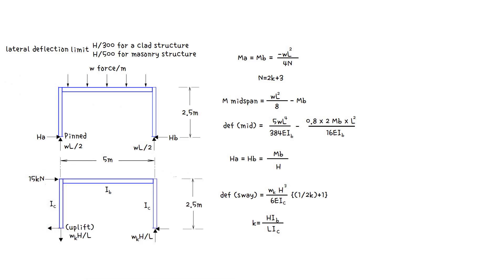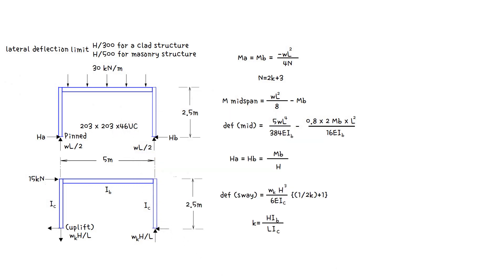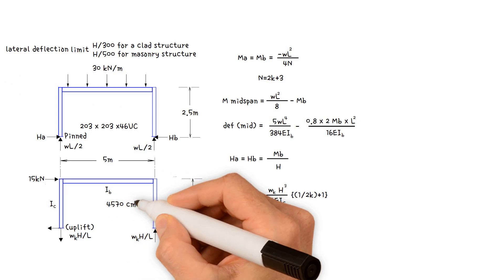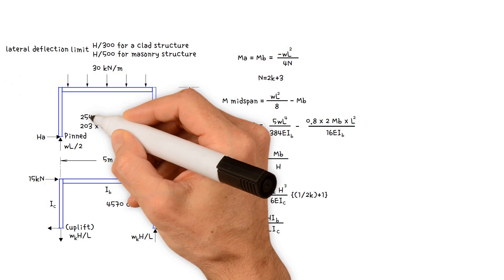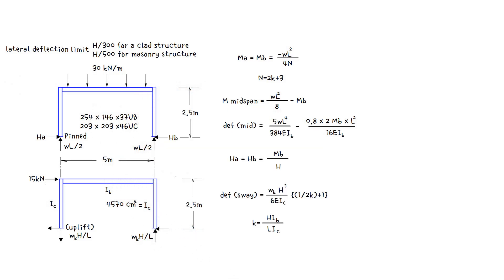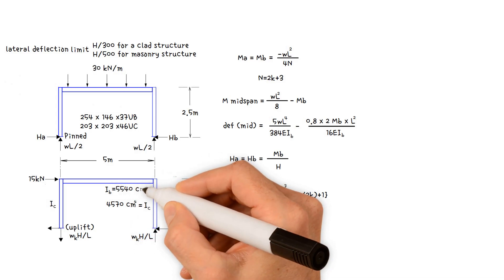The vertical loading on the beam is 30 kilonewtons per meter. The column section is 203 by 203 by 46 UC, and the moment of inertia of this section is 4570 centimeters to 4. The beam section is 254 by 146 by 37 UB, and the moment of inertia is 5540 centimeters to 4.